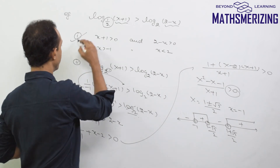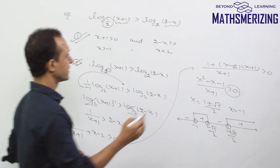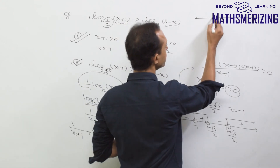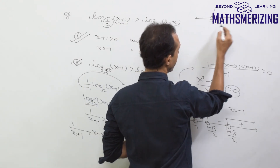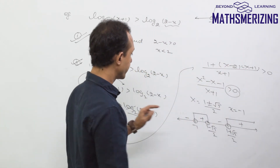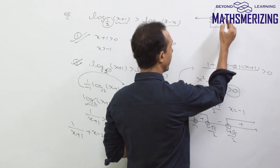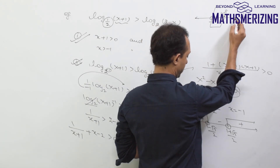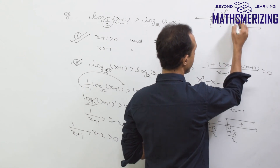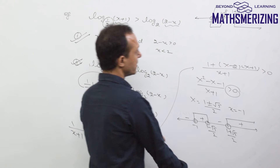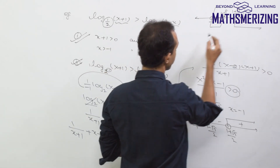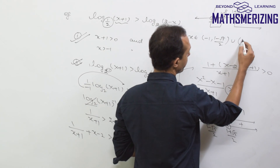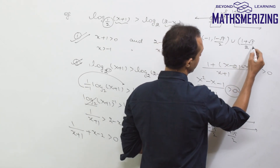Now I'll take the intersection of the domain condition and the inequality solution. The domain says x is greater than -1 and x is less than 2. The inequality solution says x lies between minus 1 and (1 minus root 5)/2, or x is greater than (1 plus root 5)/2. The common interval is: x belongs to (minus 1, (1 minus root 5)/2) union ((1 plus root 5)/2, 2).